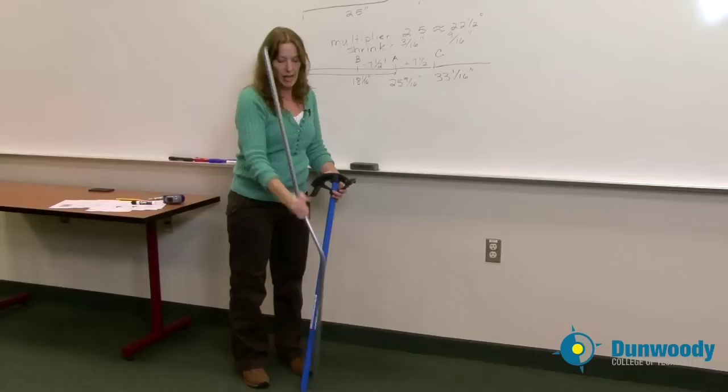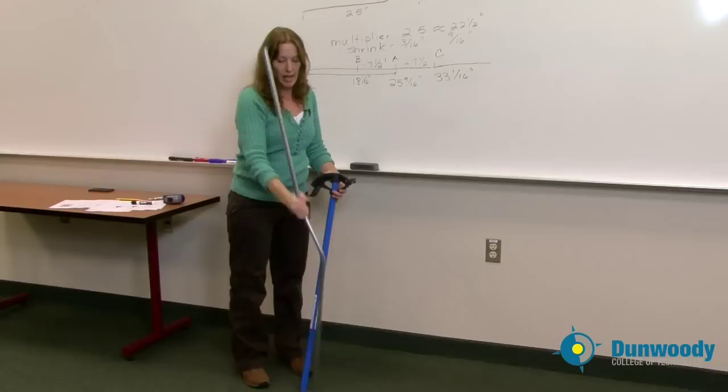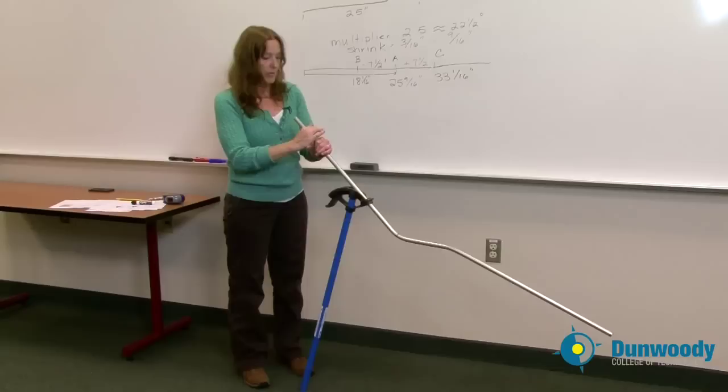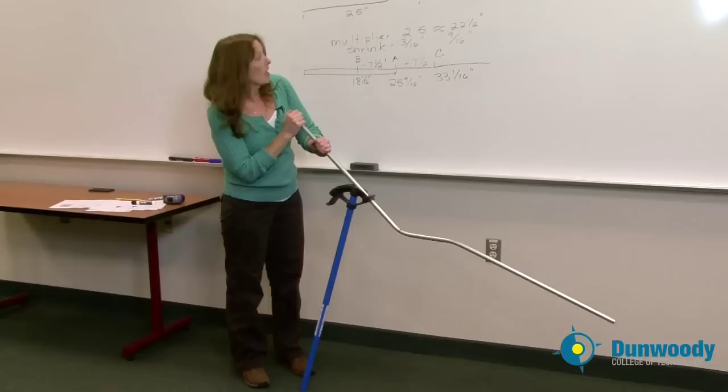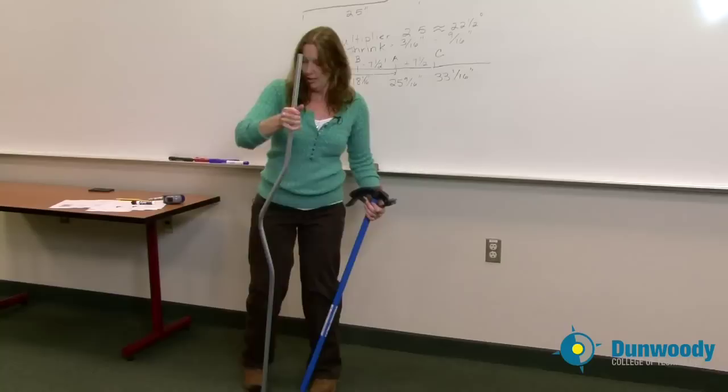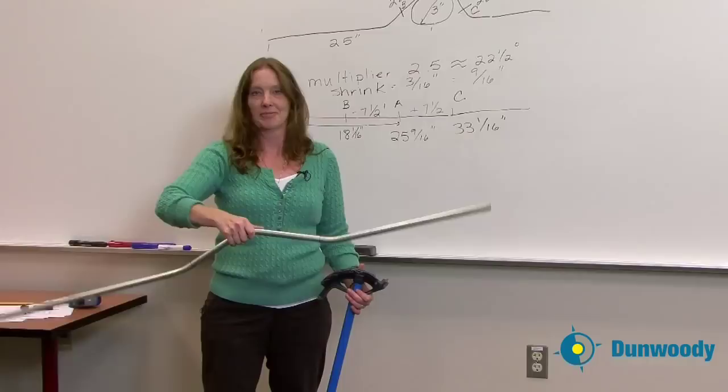I want to pull my pipe completely out of the bender and once again just like on my four-bend saddle I want to bend towards the obstruction. So I'm going to put my conduit in here, match it up to my arrow again because that's my second bend. Make sure my conduit stays nice and straight and I'm going to again bend it to 22 and a half degrees. Take it down and bend it at that 22 and a half degree mark. And there we have a three-bend saddle.